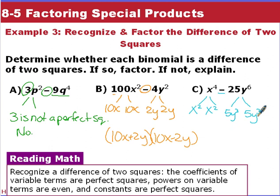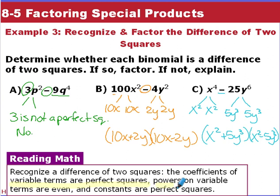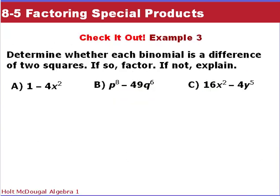That last one factors into (x² + 5y³)(x² − 5y³). To recognize the difference of two squares: coefficients of variable terms must be perfect squares, powers of variables must be even exponents, and constants must be perfect squares. Here we had even exponents, so we can break those into perfect squares. Here are your three practice problems — just looking at the exponents, y to the 5th is not a perfect square, so that one won't be a difference of two squares.